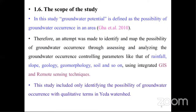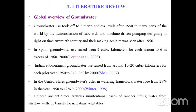The scope of this study: groundwater potential is defined as the possibility of groundwater occurrence in the area. An attempt was made to identify and map the possibilities of groundwater occurrence through assessing and analyzing groundwater occurrence controlling parameters such as rainfall, rock, geology, geomorphology, and soil, using integrated GIS and remote sensing techniques. This study includes only identifying the possibility of groundwater occurrence in qualitative terms in the watershed.